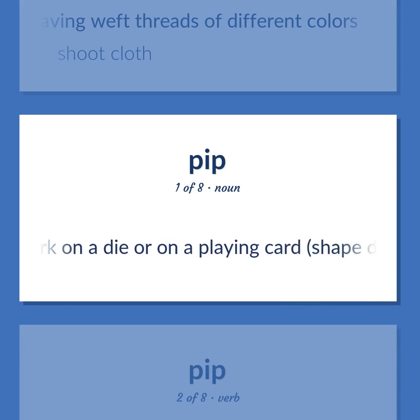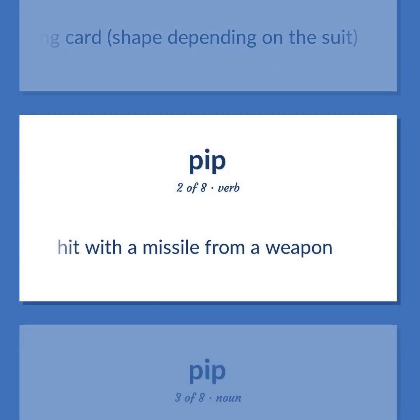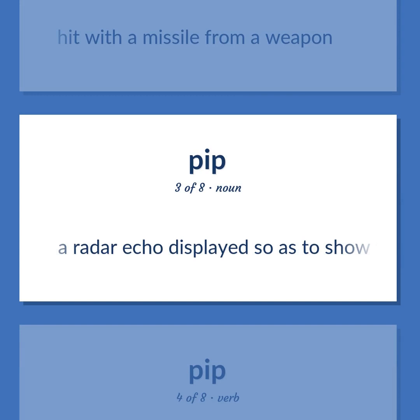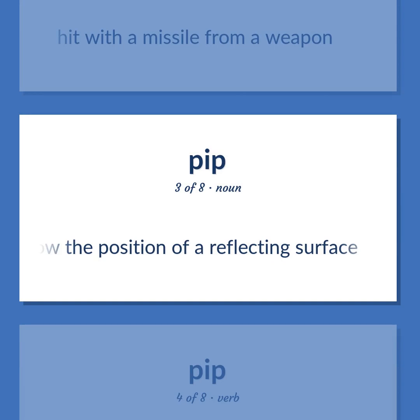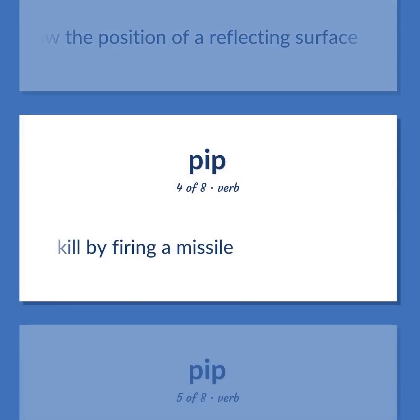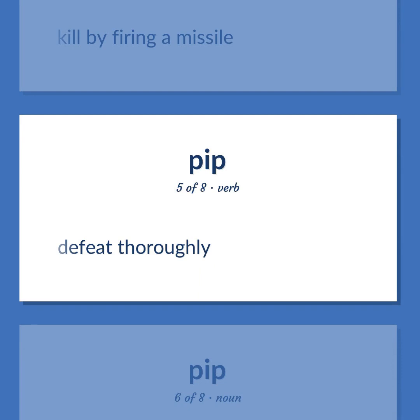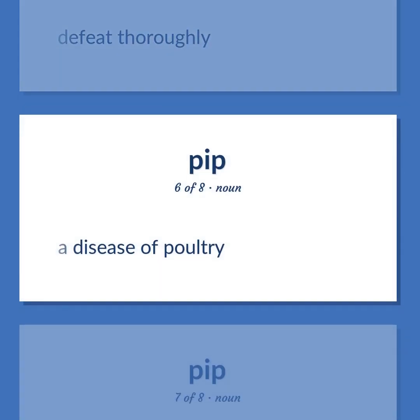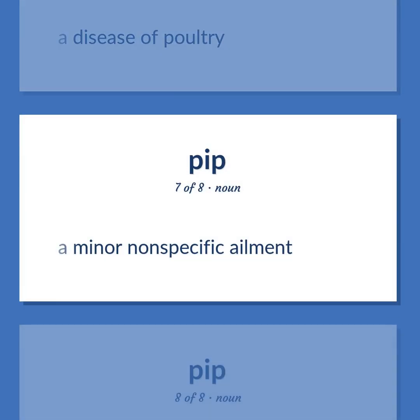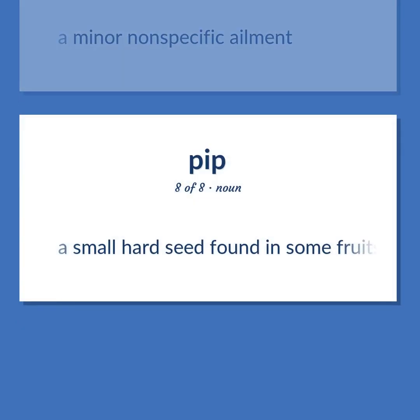A mark on a die or on a playing card, shape depending on the suit. Hit with a missile from a weapon. A radar echo displayed so as to show the position of a reflecting surface. Kill by firing a missile. Defeat thoroughly. A disease of poultry. A minor non-specific ailment. A small hard seed found in some fruits.